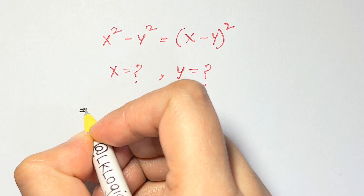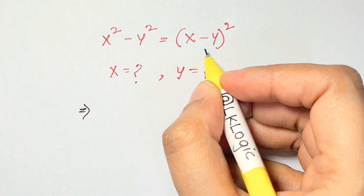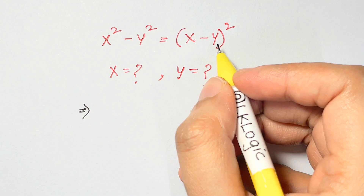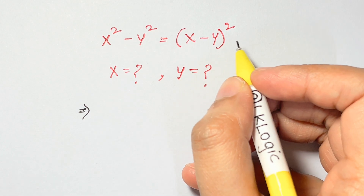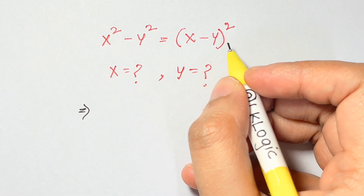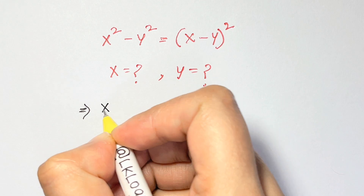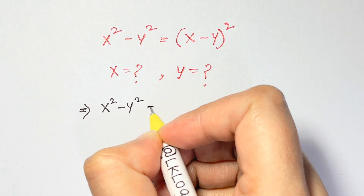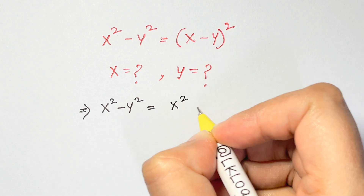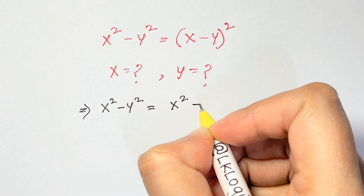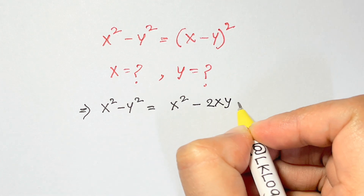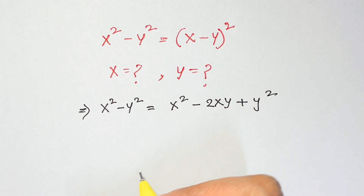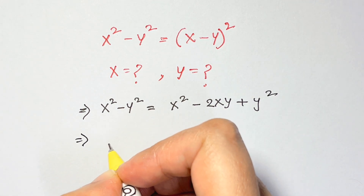First of all, we're going to expand this. This is the identity (a minus b)² which equals a² minus 2ab plus b². So we're going to write it as: x² minus y² equals x² minus 2xy plus y².